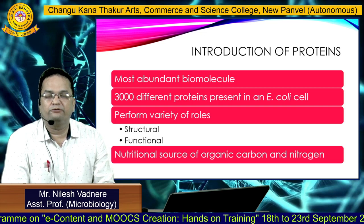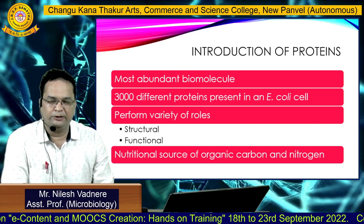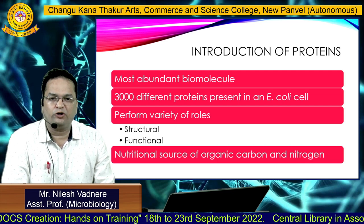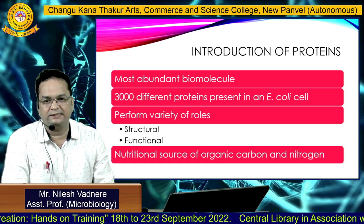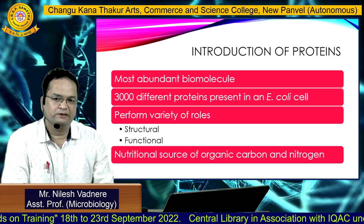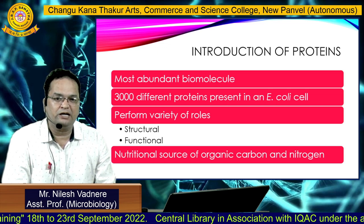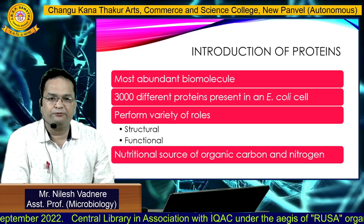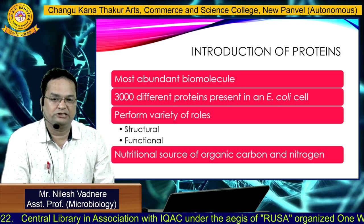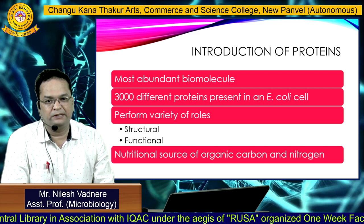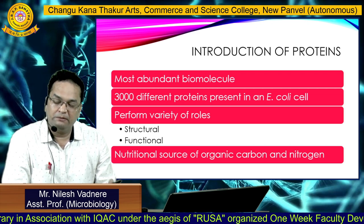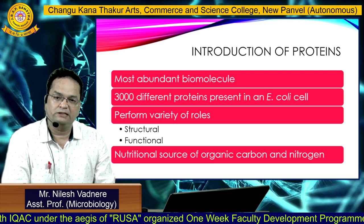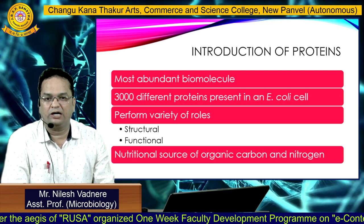Proteins are one of the most abundant biomolecules. It has been estimated that 15% of the dry weight of an E. coli cell is occupied by proteins. There are more than 3000 different types of proteins present in an E. coli cell. They perform a variety of roles such as structural roles — for example, they act as components of the cell membrane — and they also work as functional proteins, for example acting as enzymes or hormones.